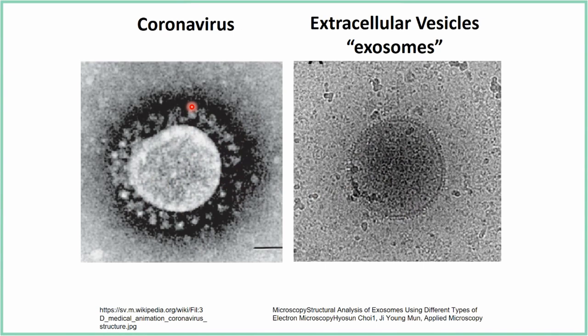Some viruses will actually attenuate themselves over time so they're not quite as infectious and perhaps less likely to kill a host. But maybe more importantly for the virus is escaping the immune system. As those spike protein sequences mutate and change slightly, so too might the recognition of those proteins by the host immune system. This can be a big problem if we're designing a vaccine and then the virus mutates around it — the vaccine works against the old version but not the new one.